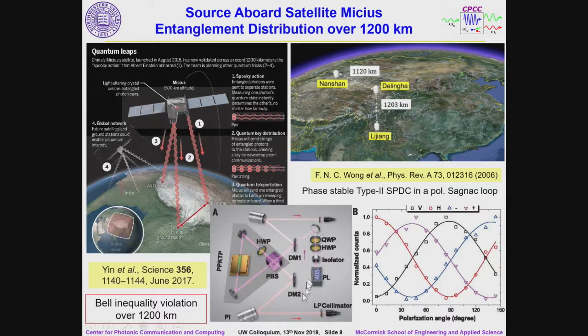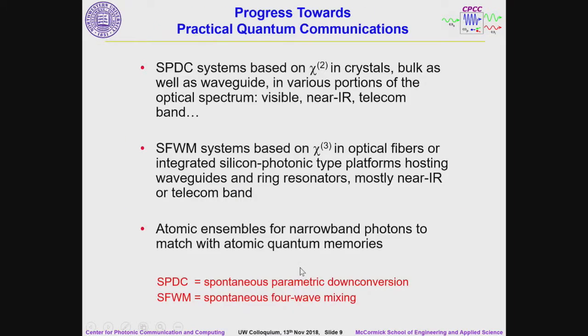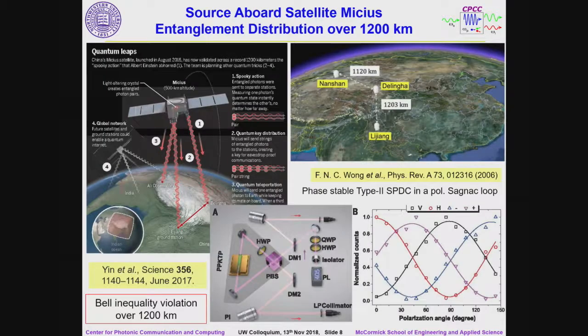The satellite has two collimators that capture entangled photon pairs in a very phase-stable geometry. As the satellite goes around, it makes links with two ground stations. In this paper they managed to show Bell's inequality violation over 1,200 kilometers, which certainly would not be possible trying to do that directly on Earth — the record for direct fiber transmission is maybe 300 to 400 kilometers at much smaller rates. This showed that global reach of entanglement distribution is possible.